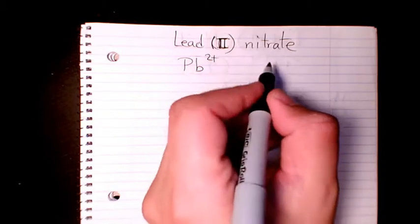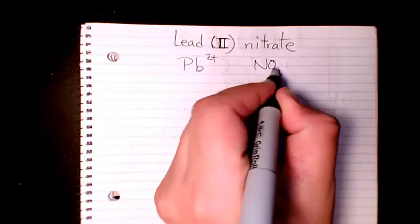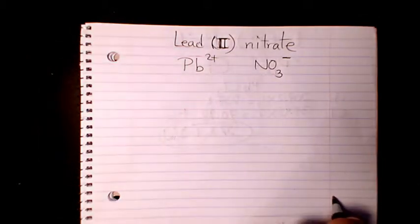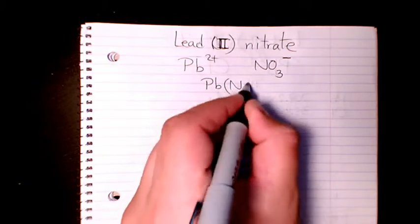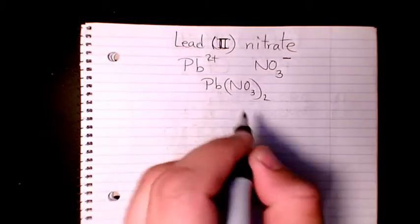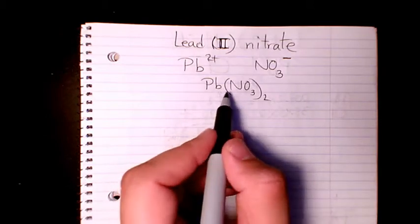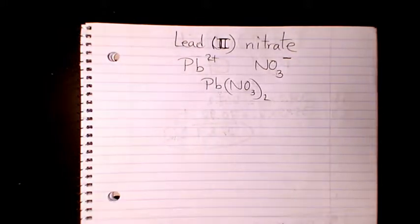Nitrate is the polyatomic ion which is NO3 minus one. So if I want to write the molecular formula, it's gonna be Pb(NO3)2. The two is gonna sit here, one is gonna sit here, but we don't show the number one, so it's gonna be Pb(NO3)2. That's their chemical formula.